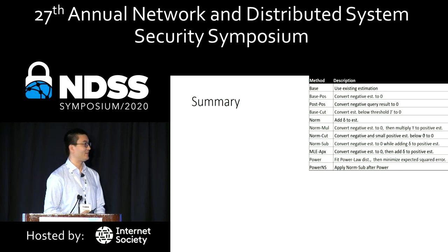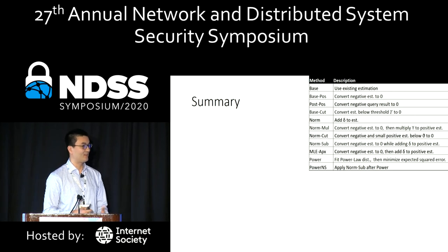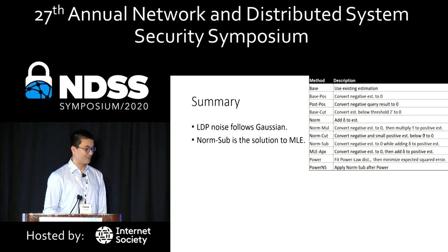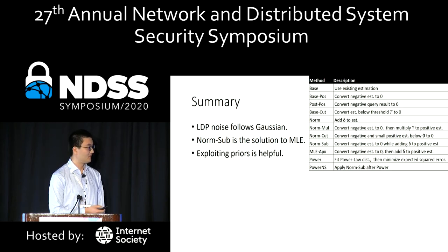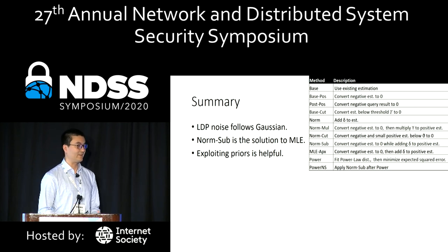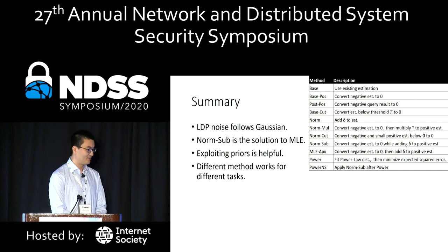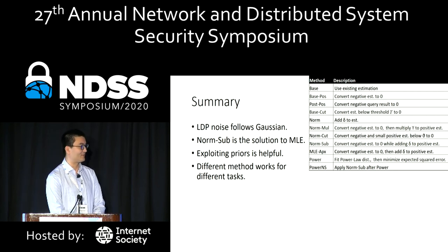To summarize, in this paper we compare and analyze 10 different methods. The key takeaways are: first, LDP noise is approximately Gaussian, and norm-sub is a solution to maximum likelihood estimation. Second, exploiting prior knowledge or consistency constraints is helpful. However, we need to be careful because doing it the wrong way leads to worse results. Finally, different methods work best for different tasks, which is discussed in more detail in the paper.